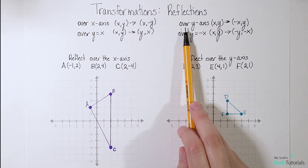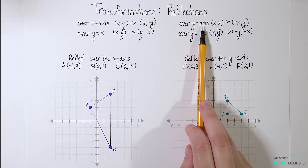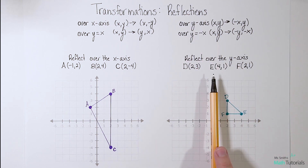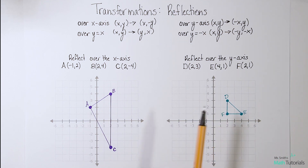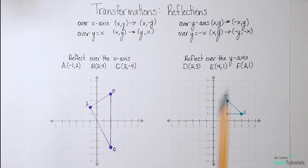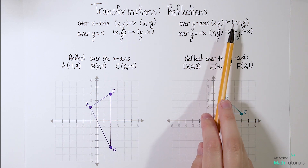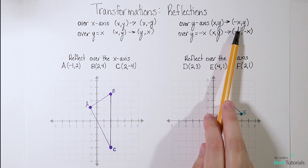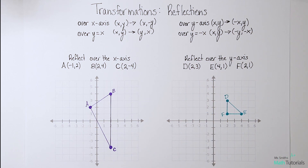The second rule is a reflection over the y-axis. We'd be looking at this axis and reflecting over it to create a mirrored image. The rule for that is (x, y) becomes (-x, y). So this time we flip the sign of whatever x is.